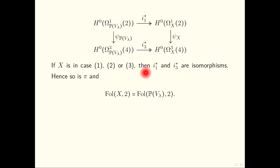For these varieties we could prove that actually these horizontal arrows i*₁ and i*₂ are isomorphisms. Hence so is π, and Fol(X,2) ≅ Fol(ℙ(T_X),2).